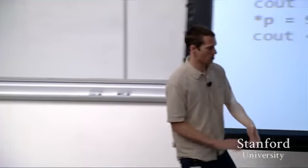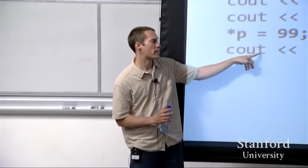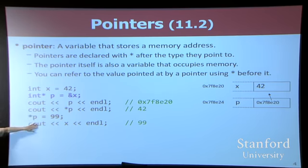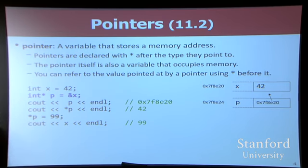Where it gets really interesting is you can modify star p. Star p equals 99 means go to where p is pointing, and when you get there, put the value 99 there. Once I've done that, if I print x, it'll print 99, even though I didn't say x equals 99. I said star p equals 99. They're the same because p is pointing at x. Does star p change? Yes, star p changes too. If I did cout star p it would print 99 also. Those are equivalent to each other. If you change one, you change the other. They're both going to go to the same place in memory and change the value there.